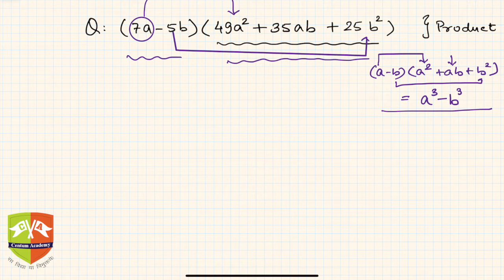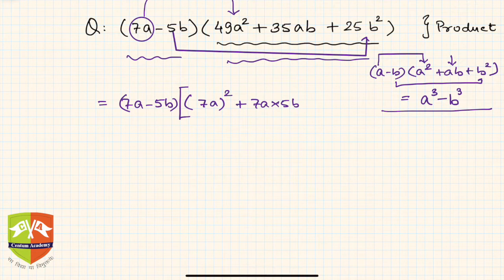So I can write this as (7a-5b), and then I can clearly write 49a square as (7a)². Let me put it within square brackets to differentiate, and then here it is 7a into 5b. Now how did I know this? Again, as I told you, it is all about observation.